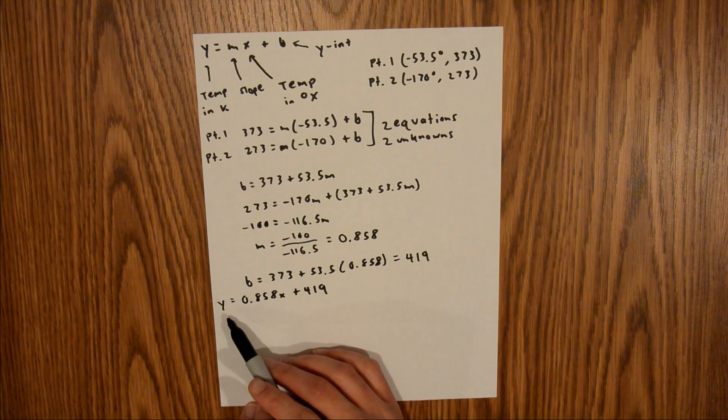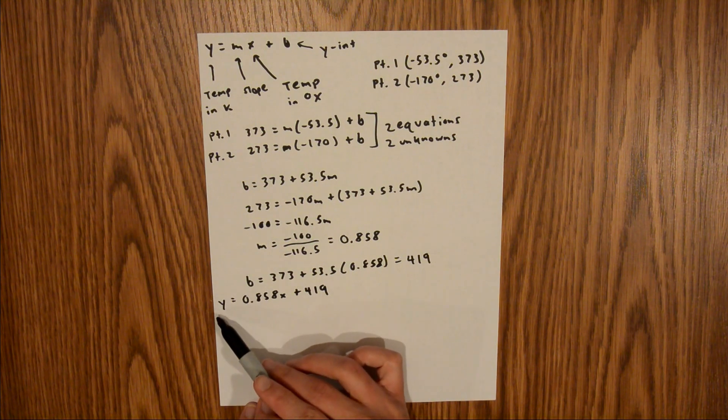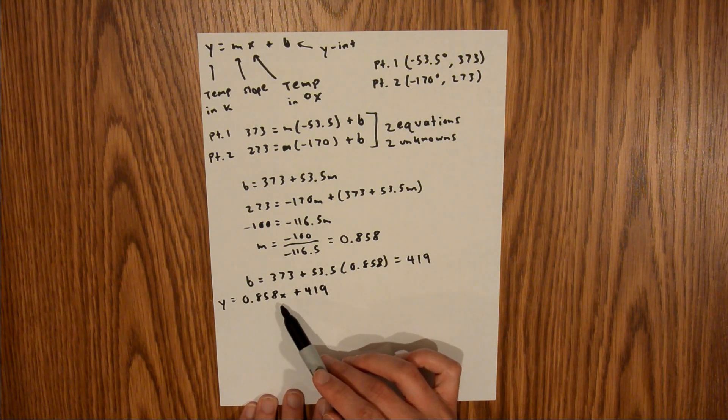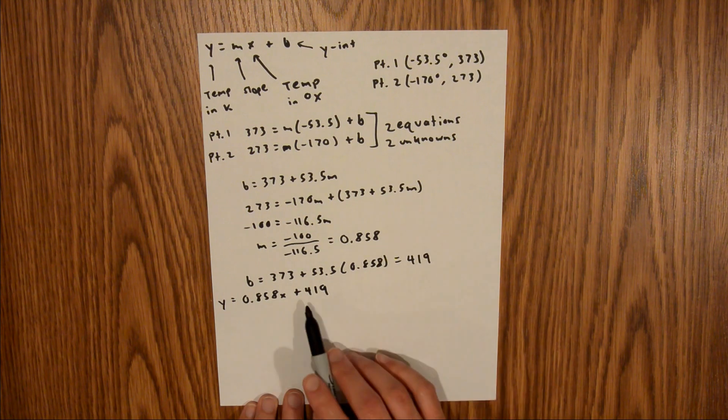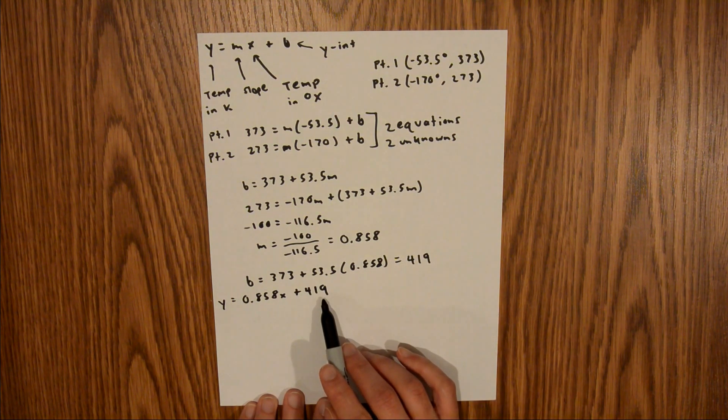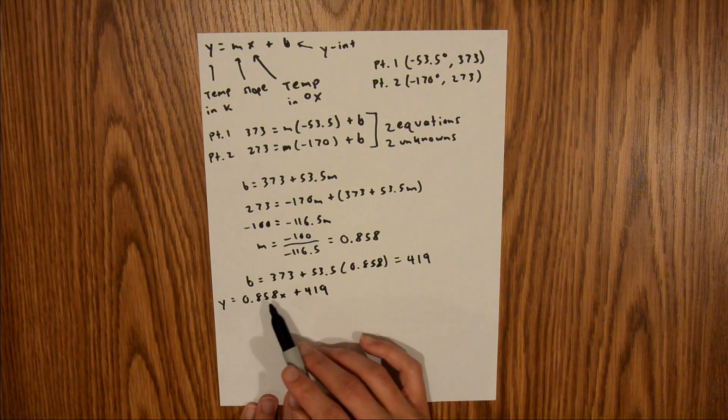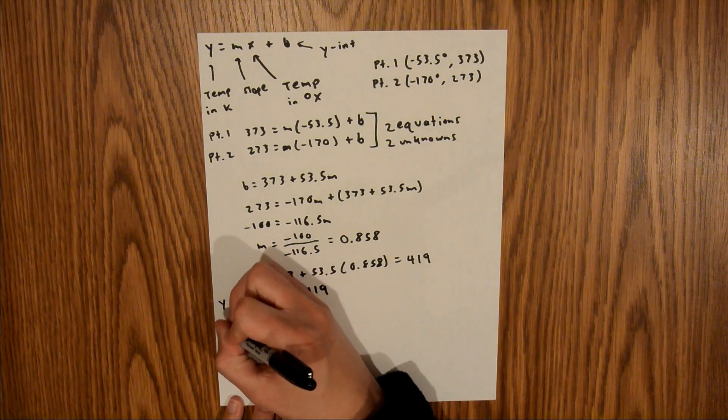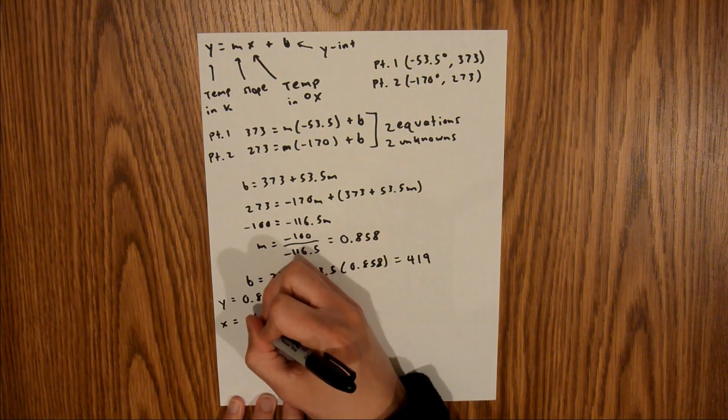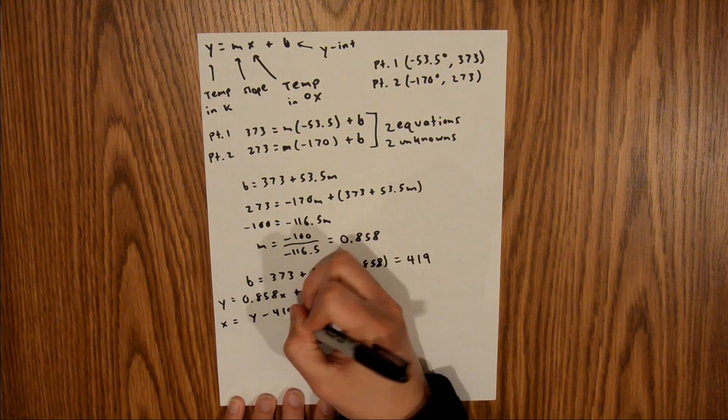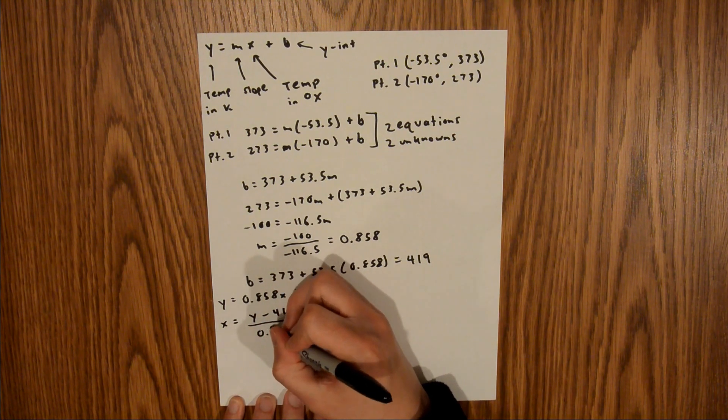I'm just going to rearrange this equation for x first by subtracting 419 from both sides, and then dividing both sides by 0.858. That's going to give me that x is equal to y minus 419 over 0.858.